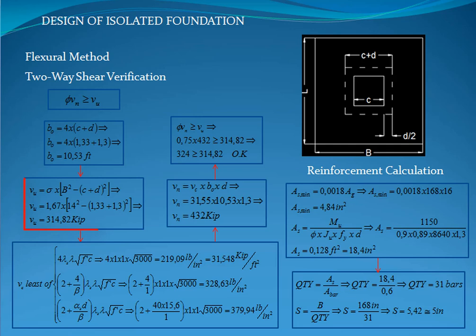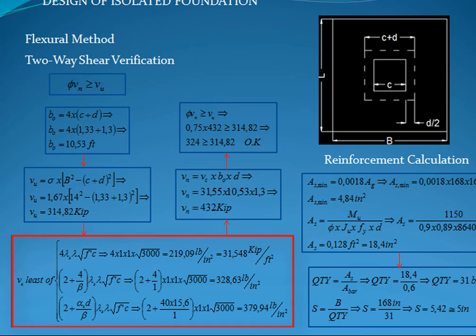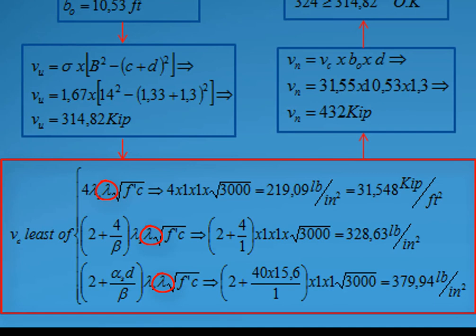Now, we calculate the factor shear force produced by the critical sections, giving a result of 314.82 kilopounds. The next step is calculate the values of the stress to nominal two-way shear strength of the concrete and take the least. Lambda is a modification factor obtained from the table 19.2.4.1. Lambda s is the size modification factor calculated with equations 22.5.5.1.3. Beta is the ratio of long to short size of the column or pedestal, and Alpha is a value that depends on the location of the columns or pedestal in the foundation, as specified in section 22.6.5.3 of the American Concrete Institute 380 standard, and the least is 31.55 kilopounds square feet.